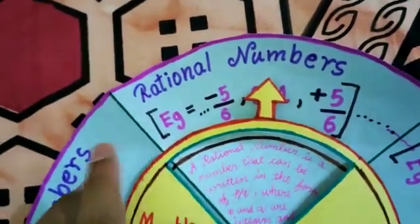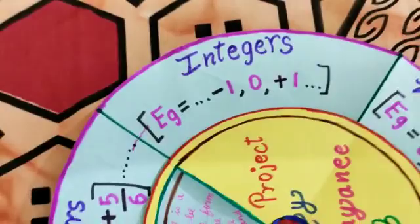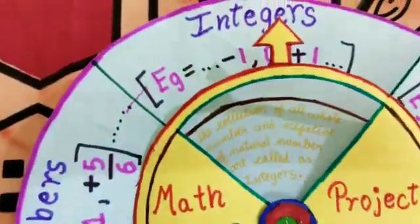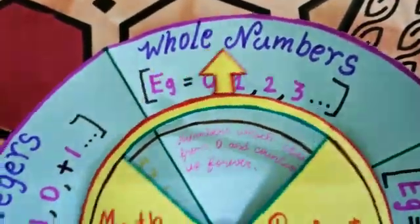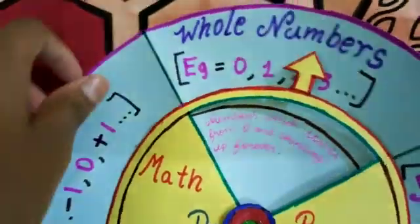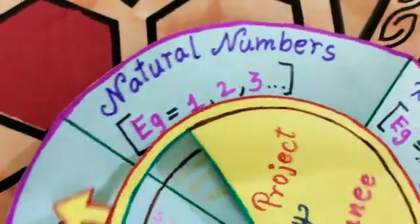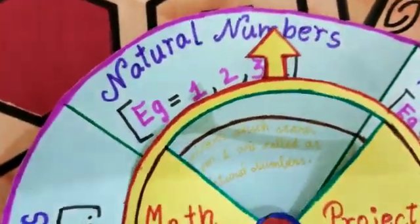First, rational numbers with examples and their meaning. Next, integers with examples and their meaning. Next, whole numbers with examples and their meaning. Next, natural numbers with examples and their meaning.